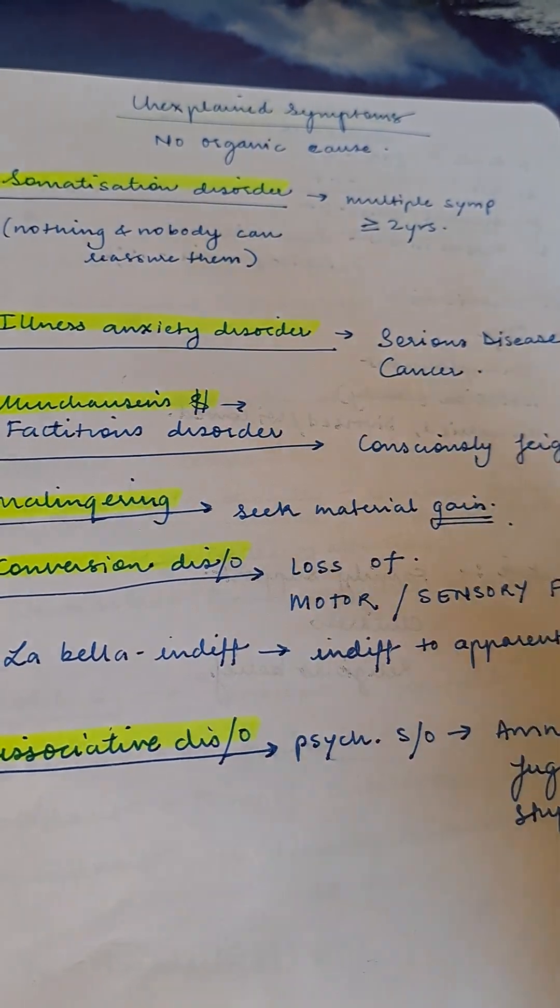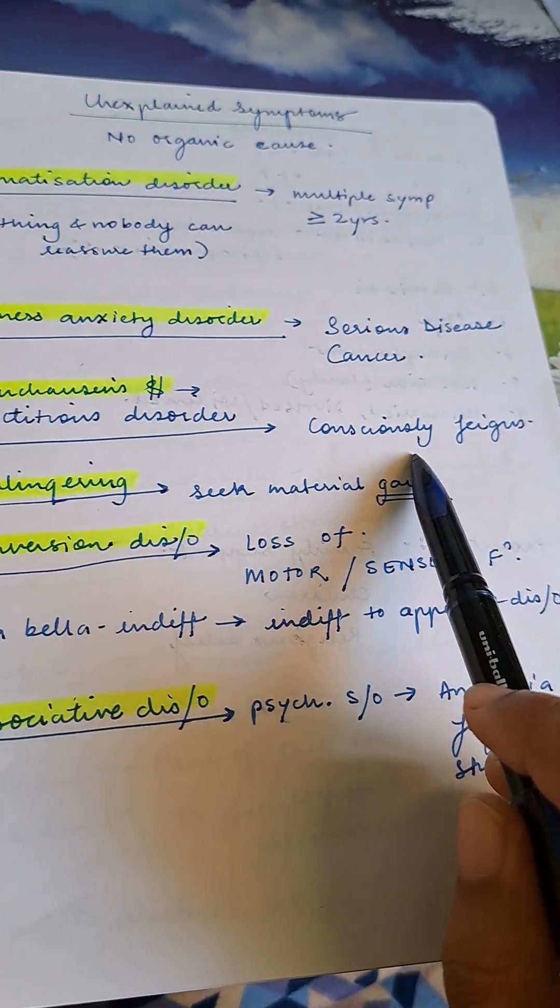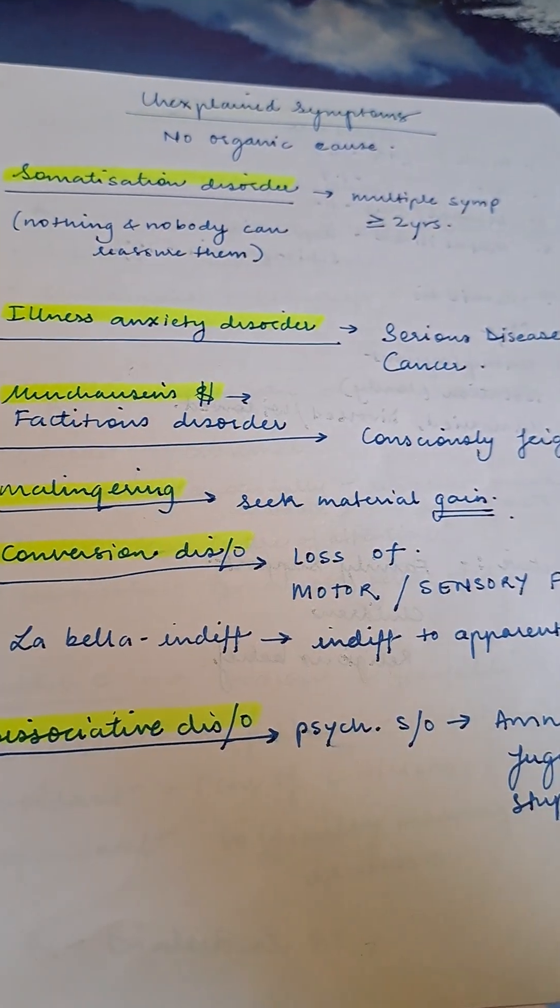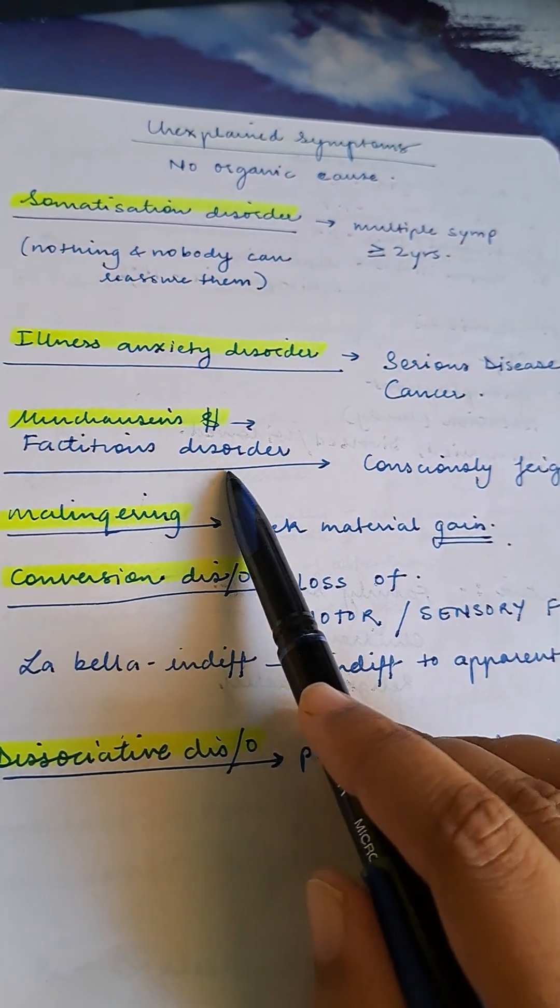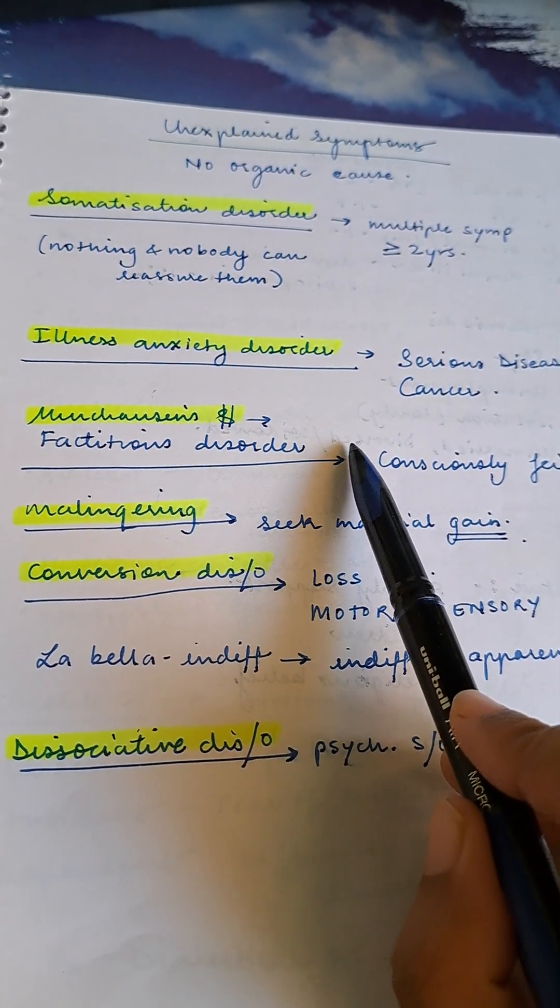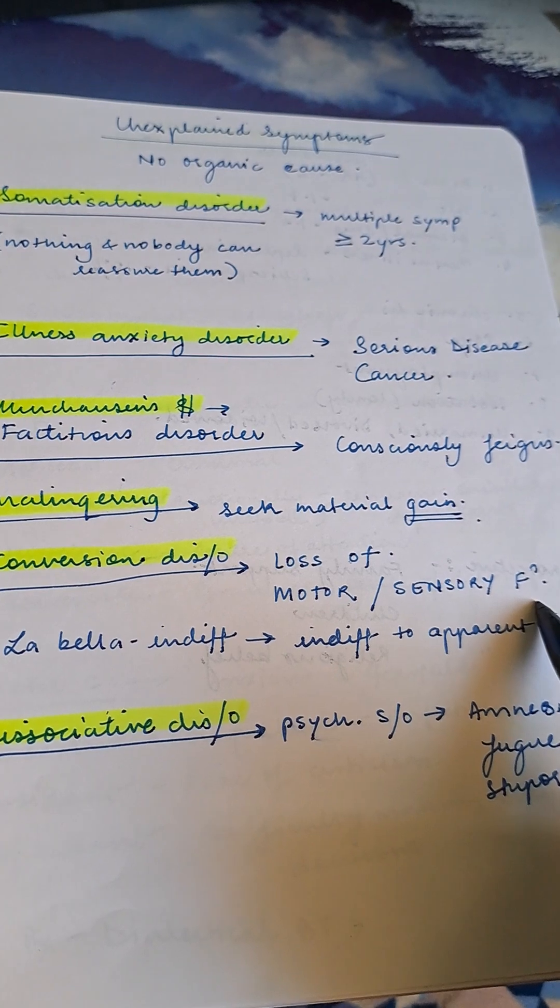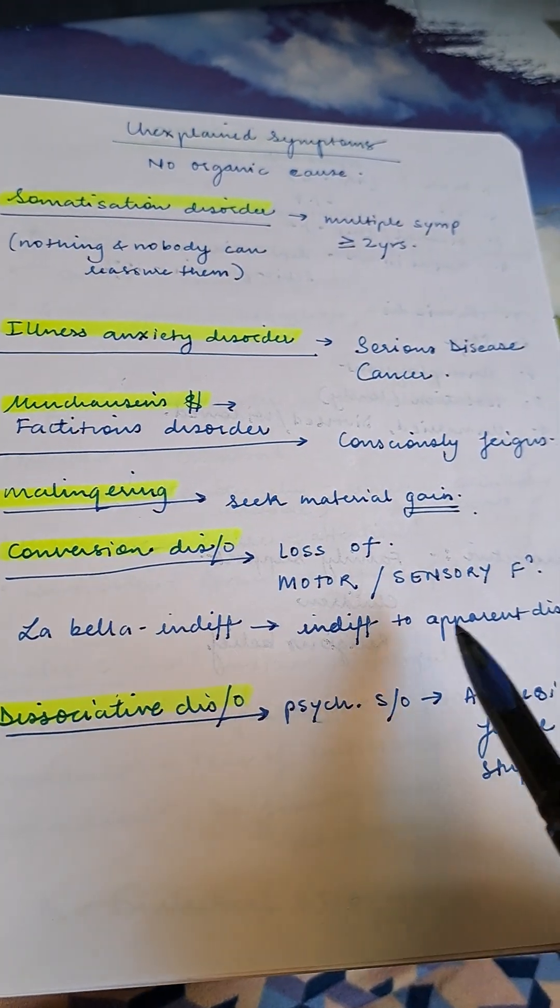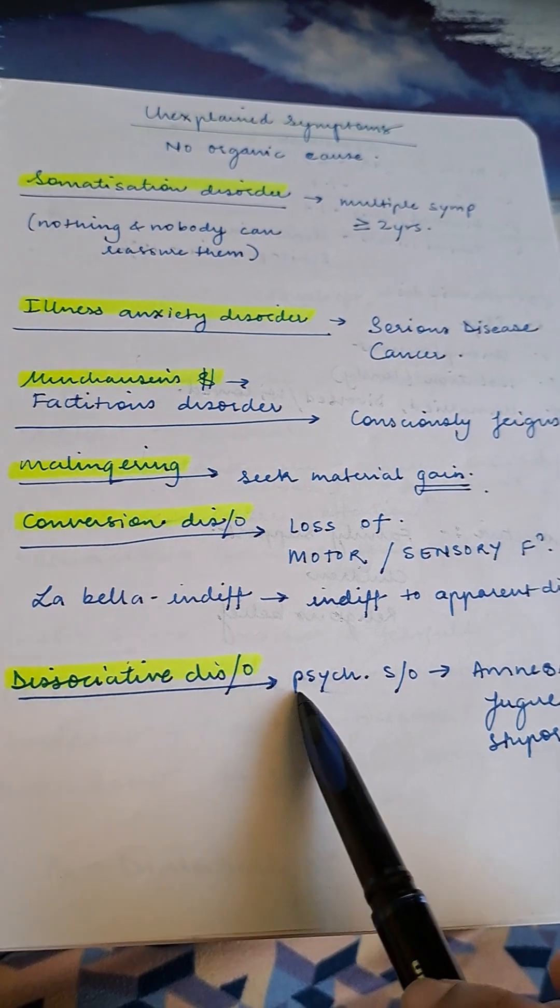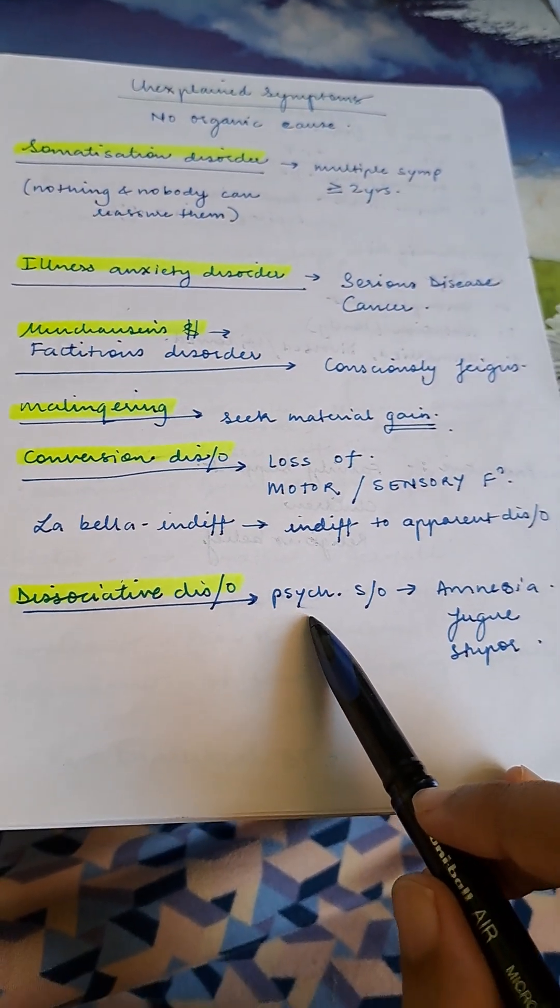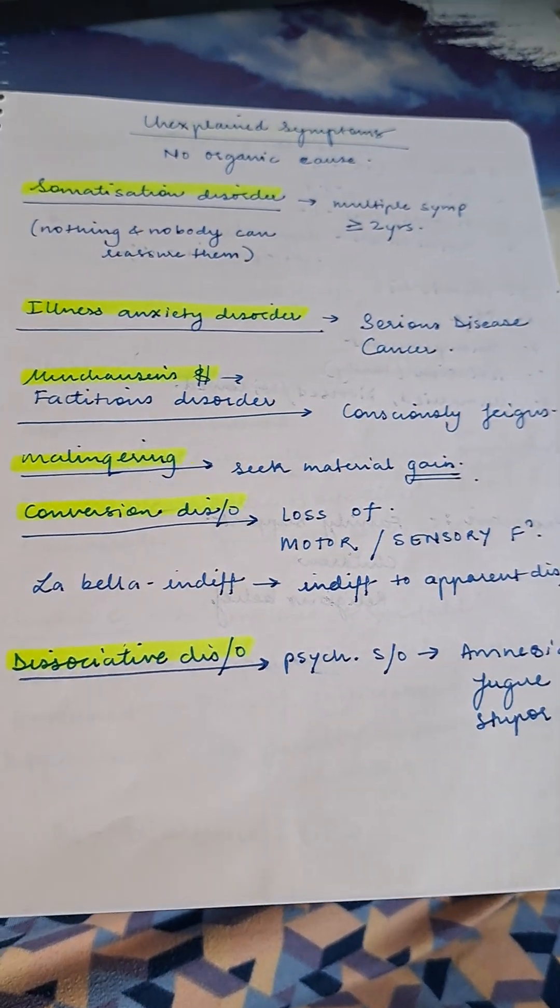Munchausen syndrome is factitious disorder where patients consciously feign reports. Malingering: they consciously feign to seek material gain. In Munchausen, there's no intention of material gain, it's just their nature. Conversion disorder: loss of motor or sensory function. La belle indifference - indifference to apparent disorder. They have no idea of this loss. Dissociation disorder suggests amnesia, fugue, or stupor.